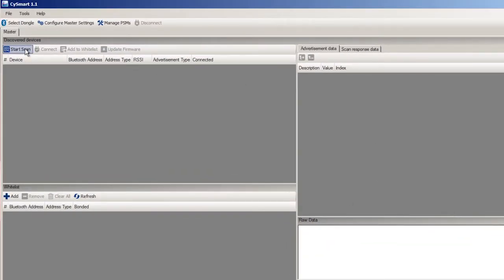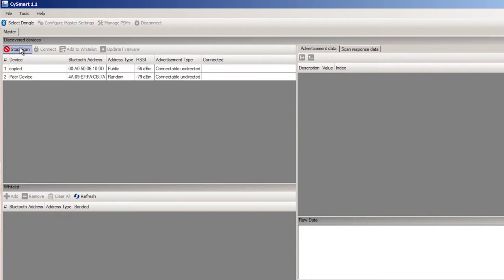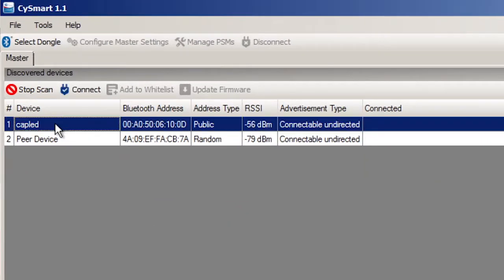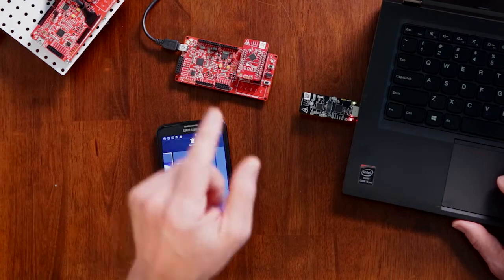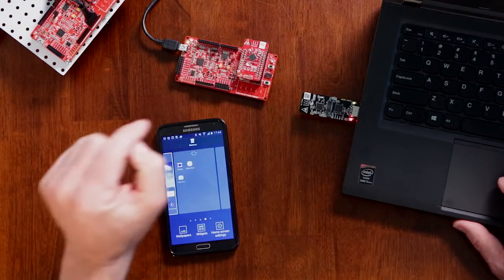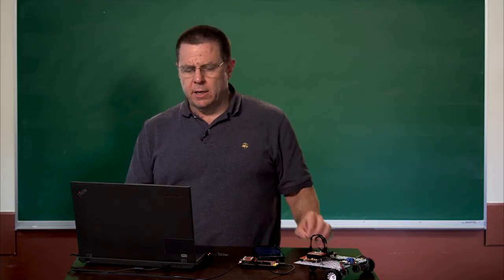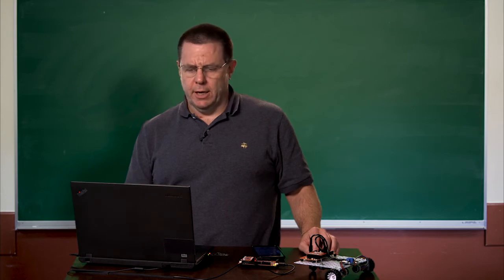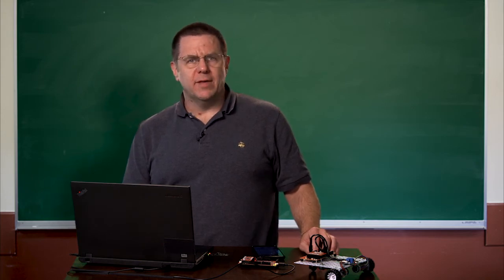So the first thing I'm going to do is I'm going to start scanning. This will scan the entire universe of everything that this dongle can hear. The first one I see is called CAP LED. So I'll click on CAP LED and press connect. When I connect, the light stops blinking on the board.